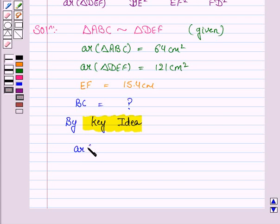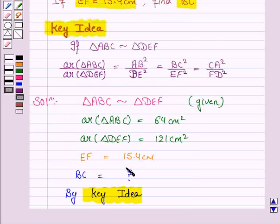when we are given the ratio of the areas of the two triangles, area of triangle ABC upon area of triangle DEF is equal to the ratio of the square of the corresponding sides,